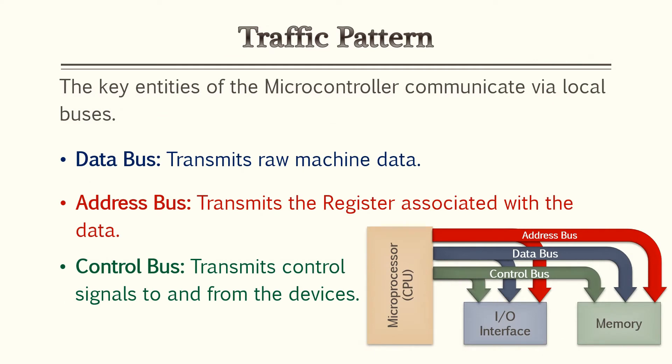Now with the elements we just went over we need to understand how they communicate with each other. The key entities of microcontroller is understanding the local buses. The local buses would consist of your data bus, address bus, and control bus. Your data bus transmits raw machine data, your binary numbers or your memory. Your address bus transmits the register associated with that data and your control bus actually transmits control signals to and from those devices. So it can turn off or on any devices that you want to talk to.